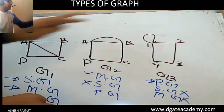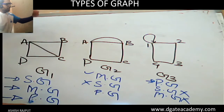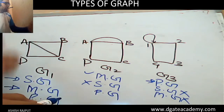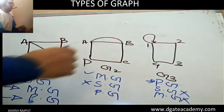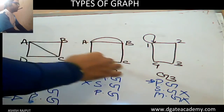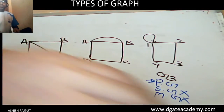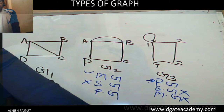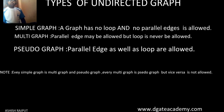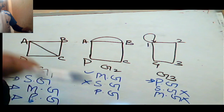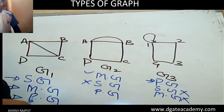A quick recap: in a simple graph there are no parallel edges and no loops. Every simple graph is also a multi-graph and a pseudo graph. Every multi-graph is a pseudo graph. But the vice versa is not true. The conclusion is: every simple graph is a multi-graph and pseudo graph, and every multi-graph is a pseudo graph. Thanks for watching — if you have any doubt, comment below.